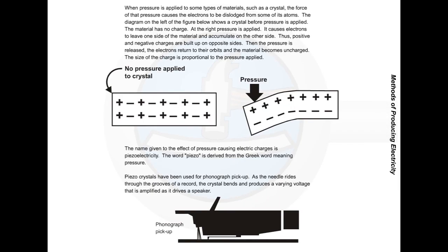Pressure. When pressure is applied to some types of materials, such as a crystal, the force of that pressure causes the electrons to be dislodged from some of its atoms. The diagram here shows a crystal before pressure is applied — the material has no charge. When pressure is applied, it causes the electrons to leave one side of the material and accumulate on the other side. Thus, positive and negative charges are built up on opposite sides.